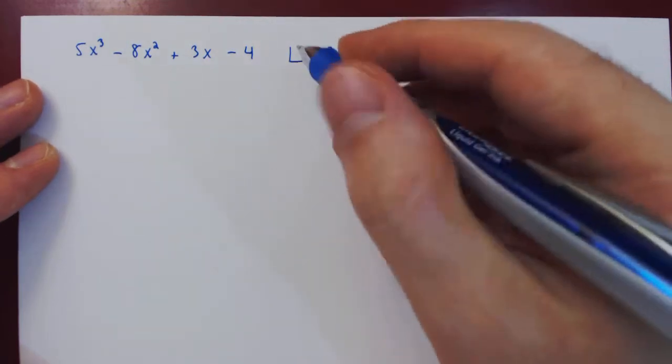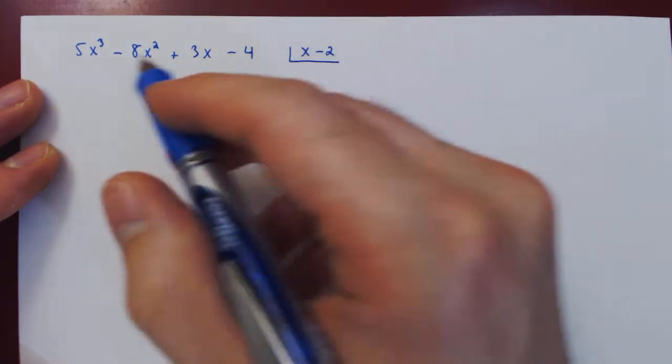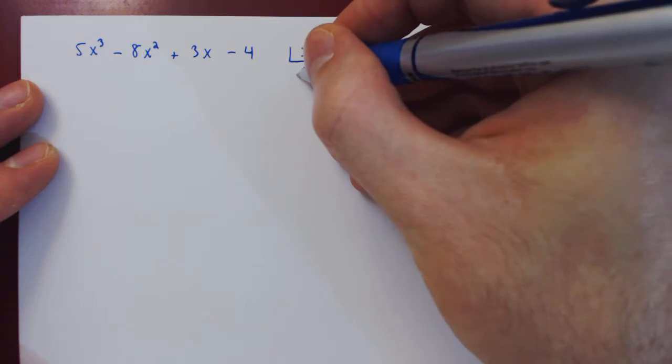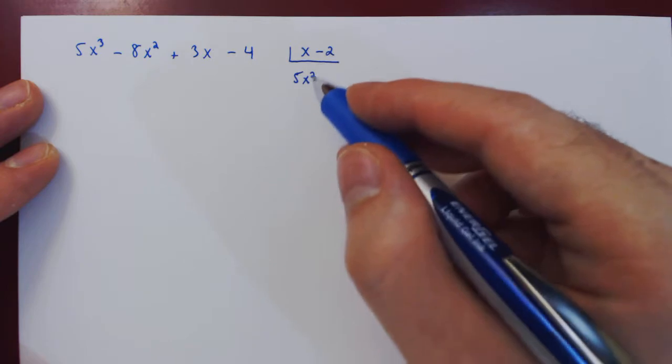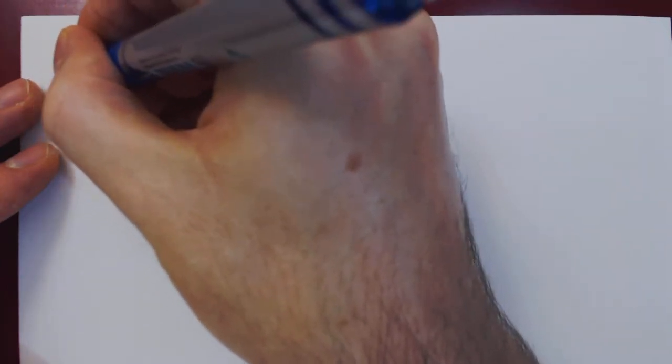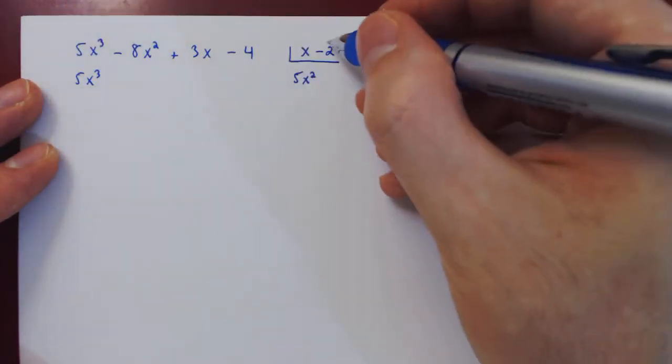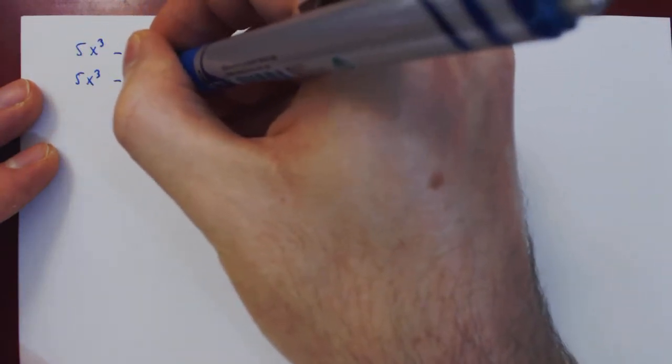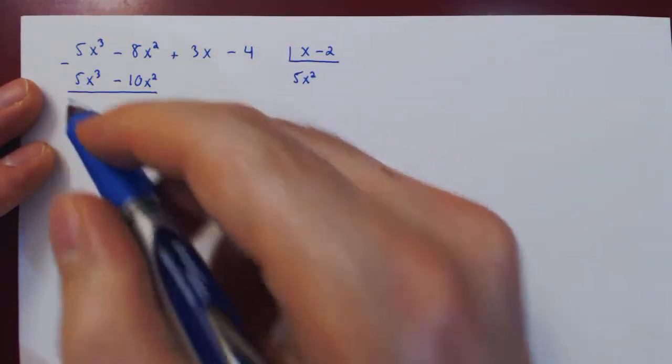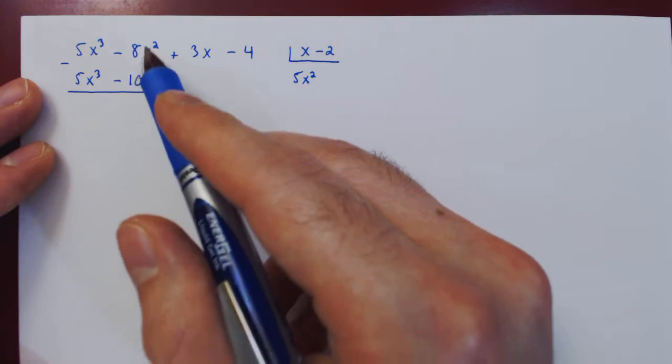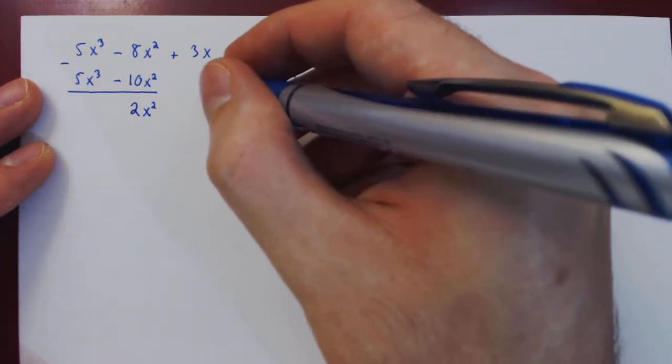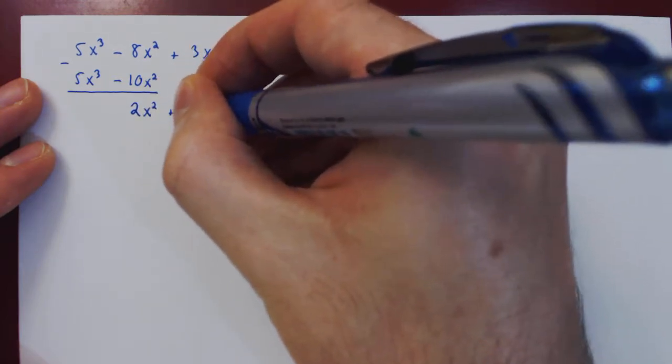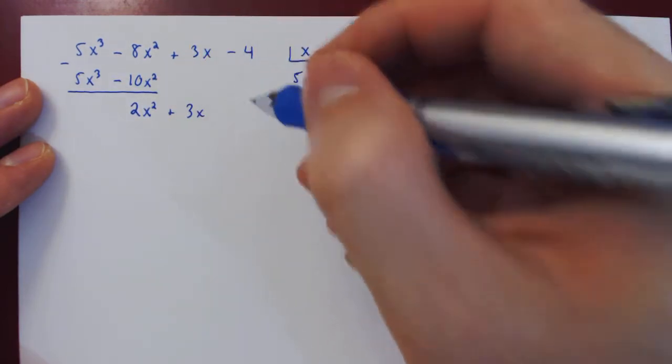So let's perform this long division. We can use x to eliminate 5x³ by choosing as a multiple 5x². We multiply x - 2 by 5x². We get 5x³ - 10x². We subtract both polynomials. These two cancel. -8 positive 10 is positive 2, so 2x². And then 3x minus 0, 3x. -4 minus 0, -4.